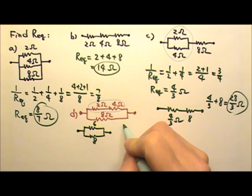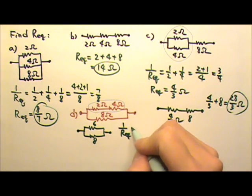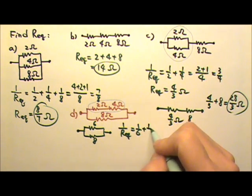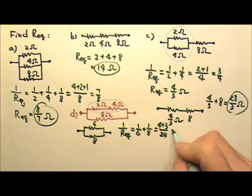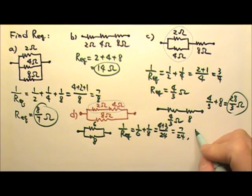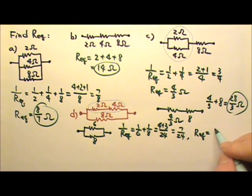So it's 1 over equivalent resistance is 1 over 6 plus 1 over 8, which gives us 24 and that's 4 plus 3. So this is 7 24th. But then we have to remember to flip over. That means the equivalent resistance is 24 divided by 7 ohms.